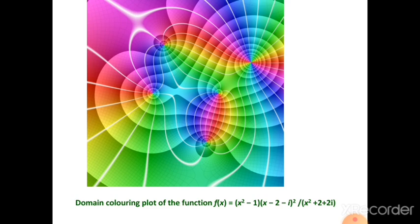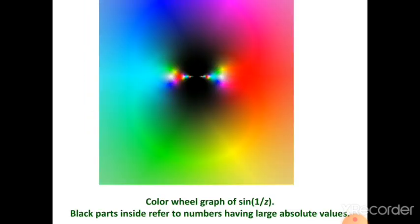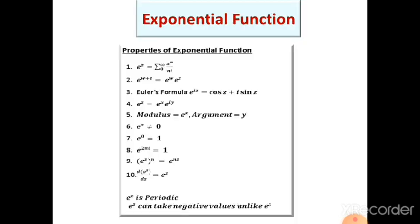Shown is the color wheel graph of sin(1/z). Black points refer to numbers with large absolute values — when z is large, 1/z is very small, so the value is small, shown as black. Bright regions show large values. The bluish region indicates the complex variable takes a negative value there, the red region indicates a positive value, and the center area approaches zero. Now we look at three important functions: the exponential, logarithmic, and trigonometric functions.